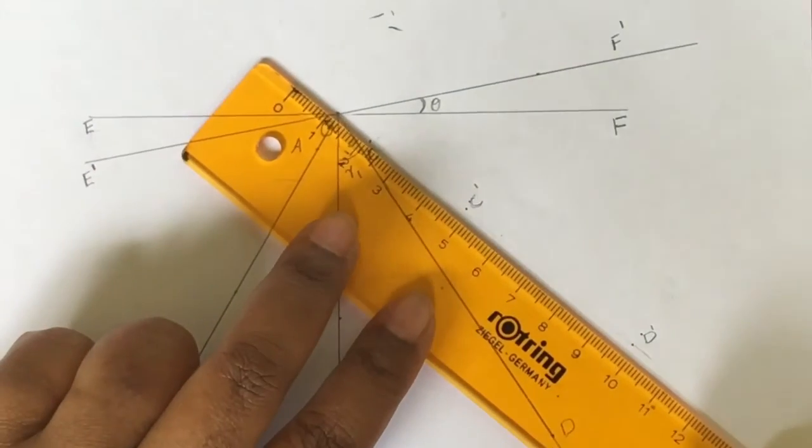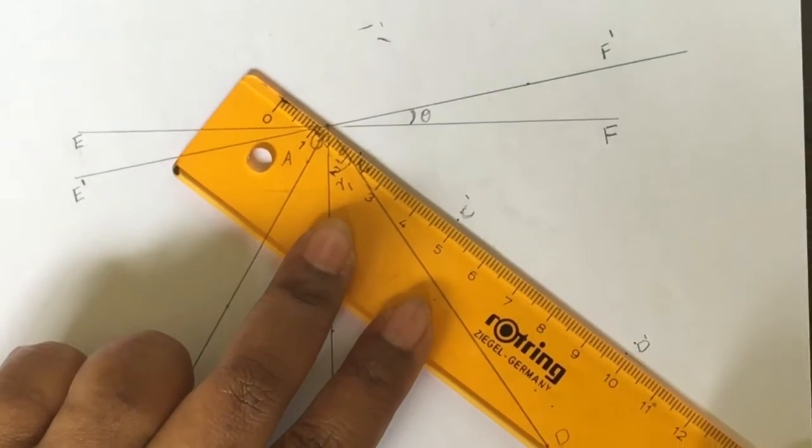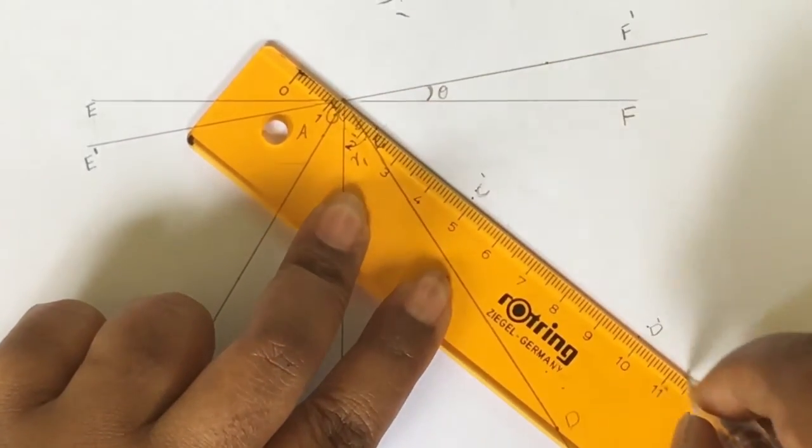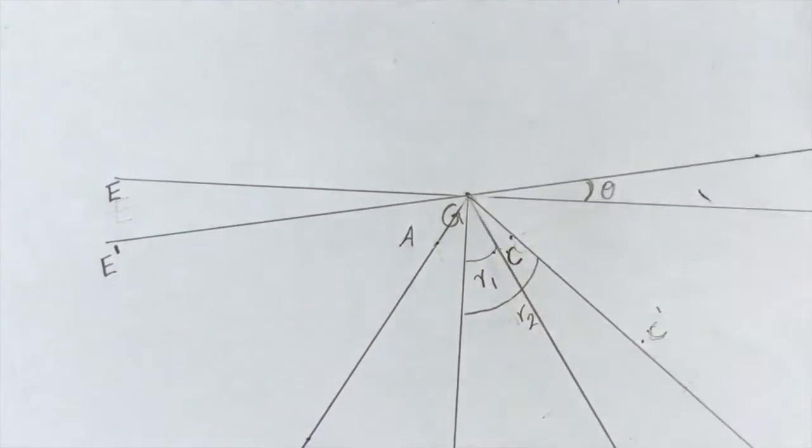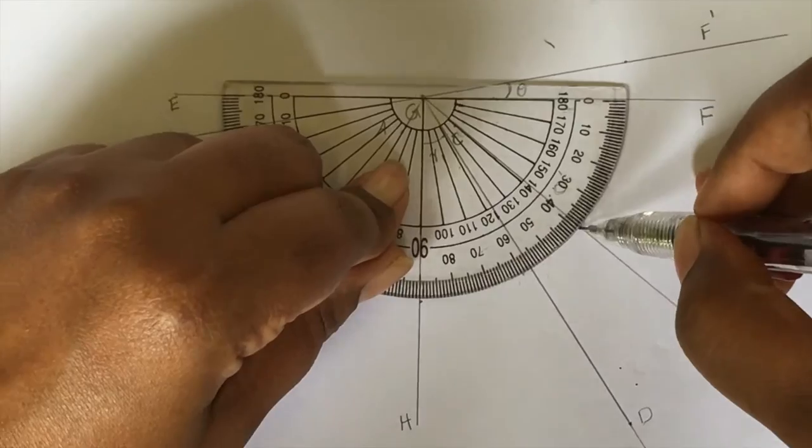Draw a line joining C' D' which continues to meet E' F'. Mark this angle as R2. Measure the angle and note it in the answer sheet.